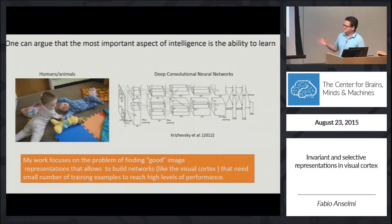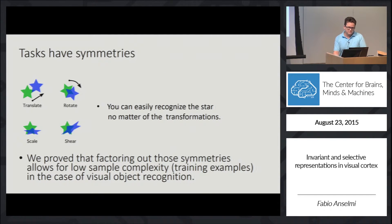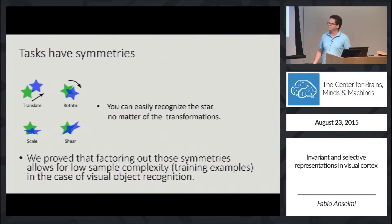The focus of my work in the last two or three years has been the problem of finding a good image representation. By good, I mean a representation that allows building up networks like the visual cortex that need a very low number of training samples. The main intuition here is that a task has symmetries. You think about a star — no matter if the star is in a certain position or rotating in a certain way, you still recognize it. Those are unimportant details. We have been able to prove that factoring out those symmetries, which are task-dependent, allows the sample complexity of the learning to be drastically reduced.